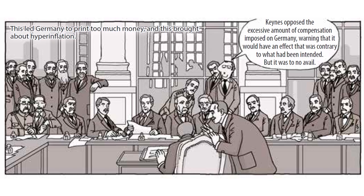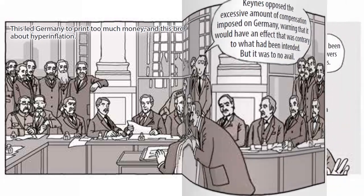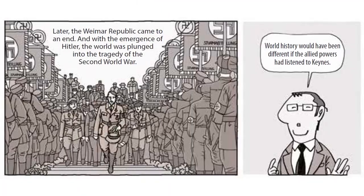During the Paris Peace Conference following World War I, the Allied forces imposed 132 billion marks on the defeated Germany as compensation for civilian damages caused during the war, leading Germany to print too much money and bringing about hyperinflation. Keynes opposed the excessive amount of compensation imposed on Germany, warning that it would have an effect contrary to what had been intended, but it was to no avail. Later, the Weimar Republic came to an end, and with the emergence of Hitler, the world was plunged into the tragedy of the Second World War. World history would have been different if the Allied powers had listened to Keynes.